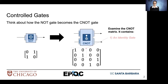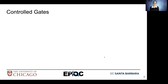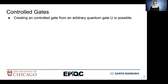When we look at the CNOT matrix, there are a couple of observations we can make. We can see that it contains an identity gate matrix as its upper left quadrant and a NOT gate in its lower right quadrant. We can take that and generalize it to form any arbitrary controlled operations.